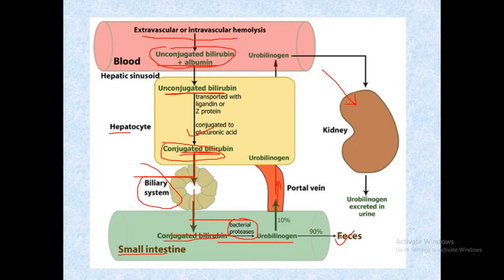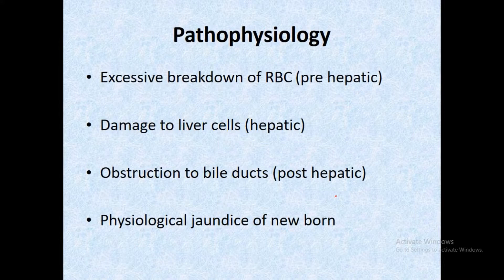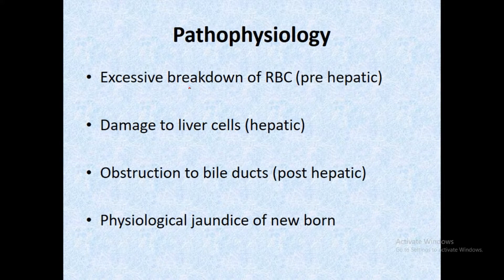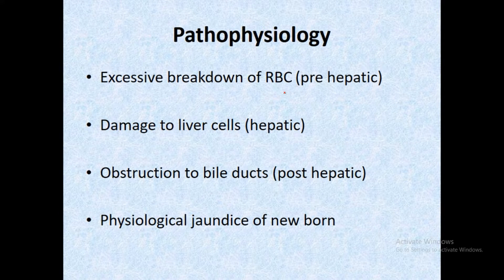Ninety percent of urobilinogen is excreted in the feces as stercobilin, which gives feces their brown color. Regarding pathophysiology of jaundice: whenever there is excessive breakdown of RBCs, a larger amount of hemoglobin is released and converted to biliverdin and bilirubin, increasing bilirubin concentration in the blood.